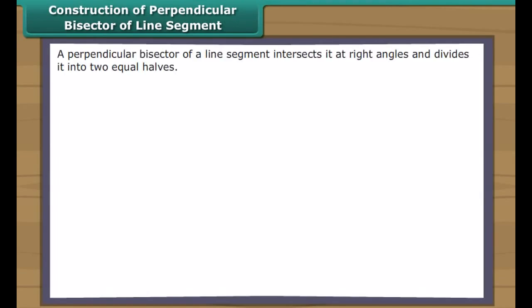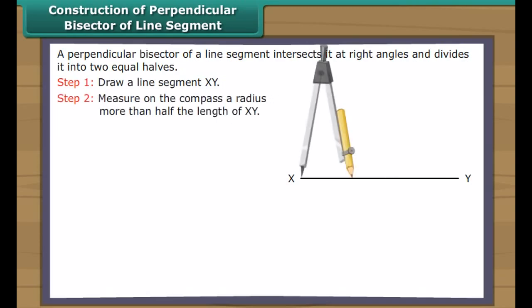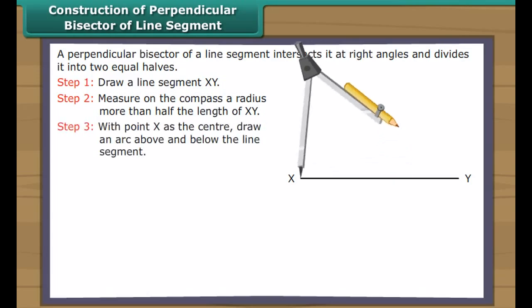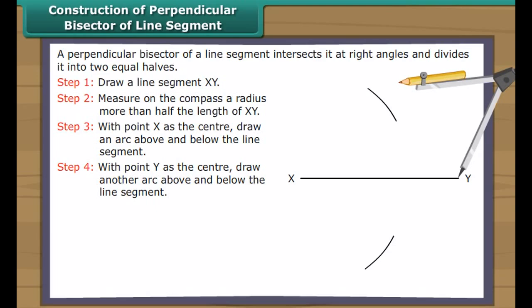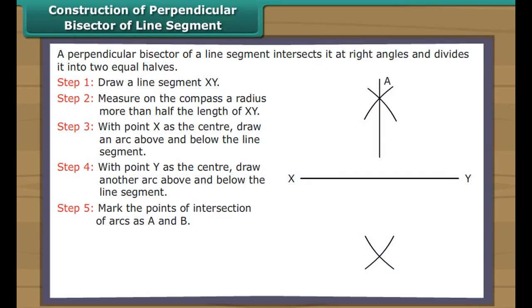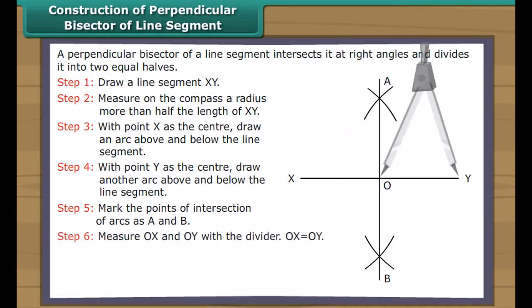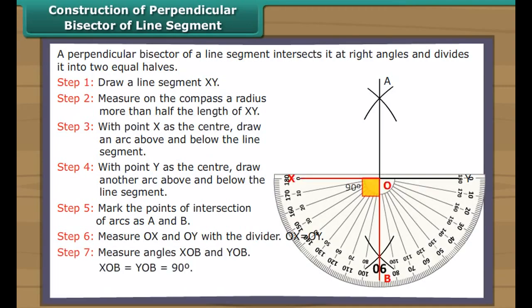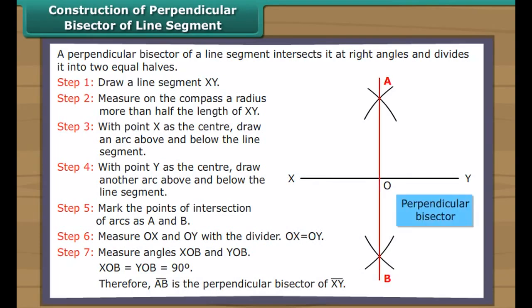Construction of perpendicular bisector of a line segment. A perpendicular bisector of a line segment intersects it at right angles and divides it into two equal halves. Draw a line segment XY. Measure on the compass a radius more than half the length of XY. With point X as centre, draw an arc above and below the line segment. With point Y as centre draw another arc above and below. Mark the points of intersection of arcs as A and B. OX is equal to OY, and angle XOB equals angle YOB equals 90 degrees. Therefore AB is the perpendicular bisector of XY.